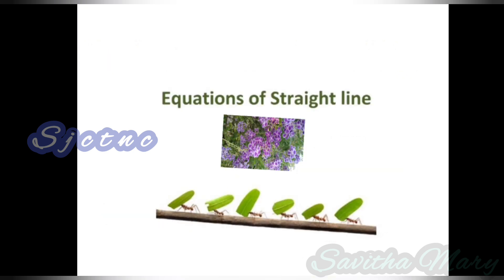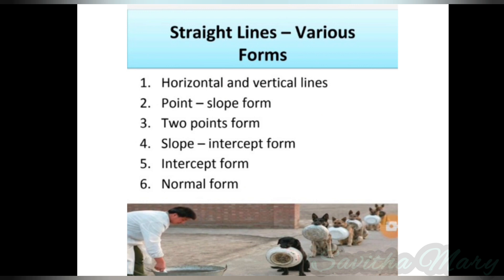I am going to explain the topic: equation of straight line. The various forms of straight line are listed here. There are six forms. The first one is horizontal and vertical lines. The second one is point-slope form. The third one is two-point form. The fourth one is slope-intercept form. The fifth is intercept form, and the sixth is normal form.